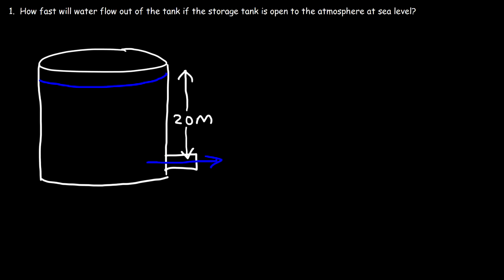How fast will water flow out of the tank if the storage tank is open to the atmosphere at sea level? In the figure below, the water level is 20 meters higher than the level where the water exits the tank. How can we calculate the efflux speed of the water as it leaves that storage tank?